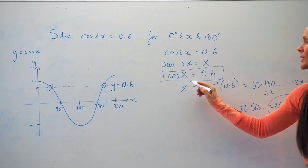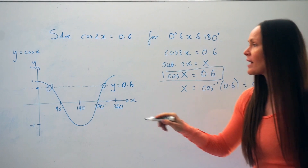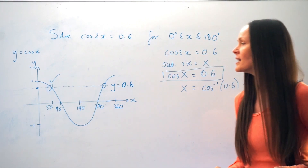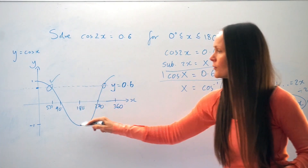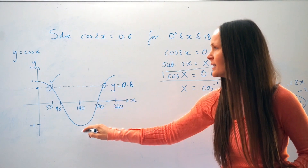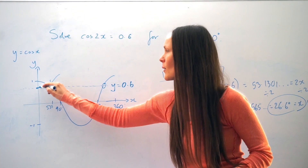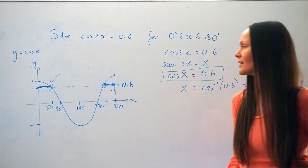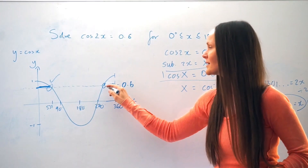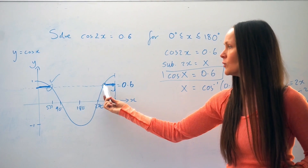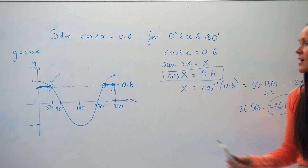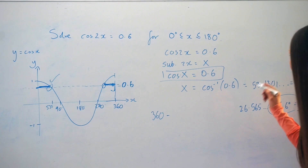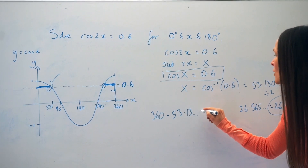When I solved cosX = 0.6, I got 53.1 — that was the x-coordinate of the first intersection point. Because this section of the graph y = cosX is symmetrical, with the line of symmetry at x = 180, the distance from the y-axis to the first intersection point should equal the distance from the second intersection point to x = 360. So if this distance is 53.1, I can work out the x-value of the other intersection point: it's 53.1 degrees before 360, so I subtract 53.13... from 360.